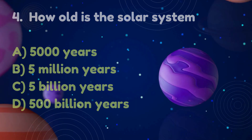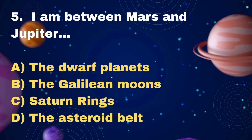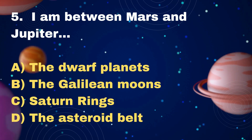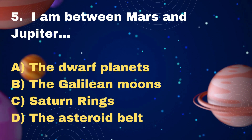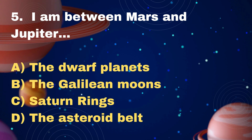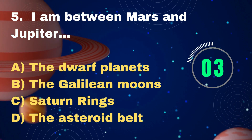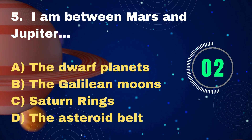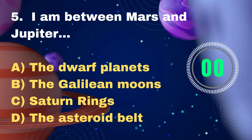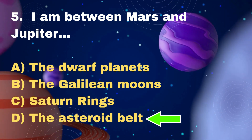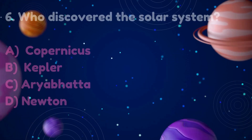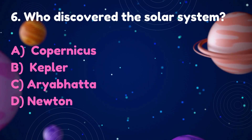I am between Mars and Jupiter. Options: The dwarf planets, The Galilean moons, Saturn's rings, The asteroid belt. Answer: The asteroid belt.